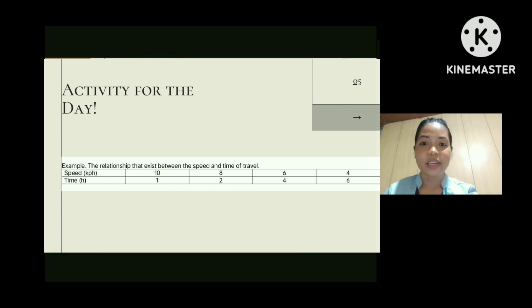We have here another example of situation that shows inverse variation. We have here the table showing the relationship that exists between the speed and the time of travel. Kindly study the table and give me your ideas after. I will call somebody to express or share his or her ideas. I will give you one minute to study the table.